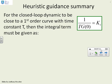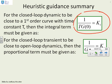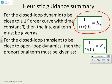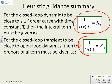So, a summary of the heuristic guidance. We've said what the integral time constant should be. There it is. 1 over T g of 0. In the previous video, we've shown that the proportional gain, if you want roughly open-loop dynamics, is given by this. 1 over g of 0 equals kp.